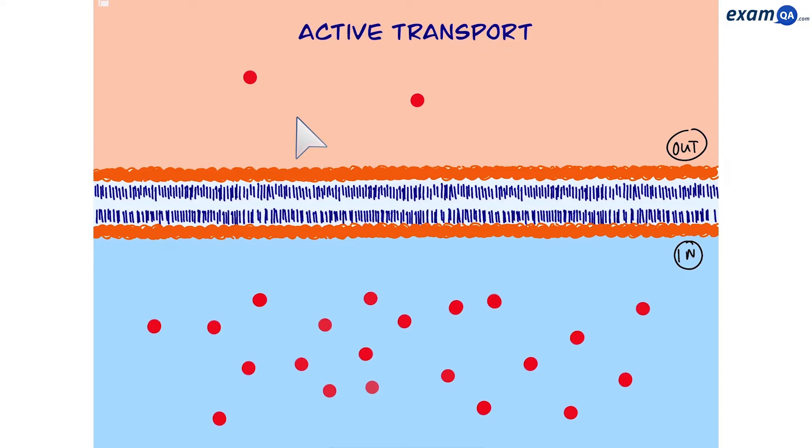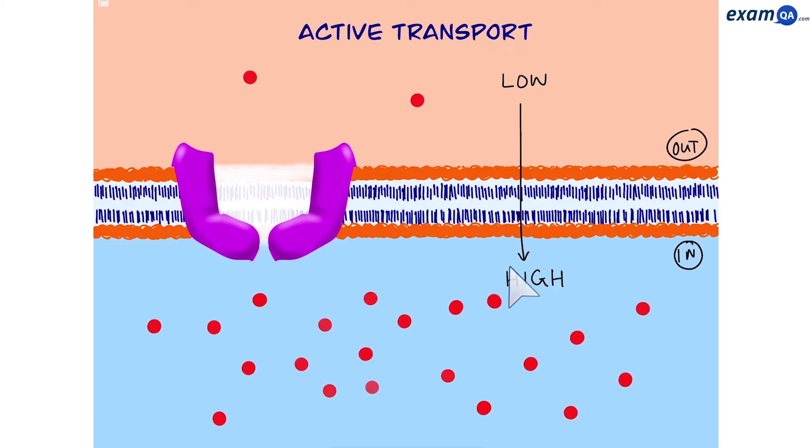So let's say we have these molecules and we want them to go from low concentration to high concentration. In other words against their concentration gradient. For this to happen one requirement is a carrier protein.